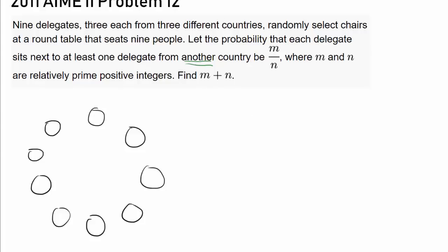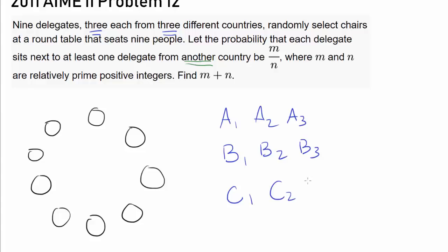Just for simplicity, let's say country 1 is A, country 2 is B, and country 3 is C. We have 3 different countries, and for each of them we have 3 people, so let's label them A sub 1, A sub 2, A sub 3 — the delegates from country A — then B sub 1, B sub 2, B sub 3, and C sub 1, C sub 2, C sub 3. We want to make sure that each delegate has at least 1 delegate from another country adjacent to him or her.